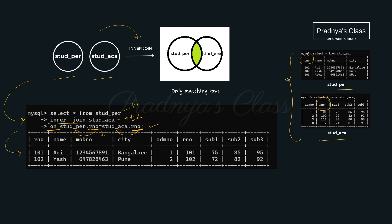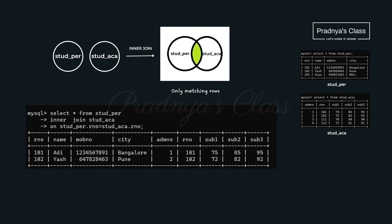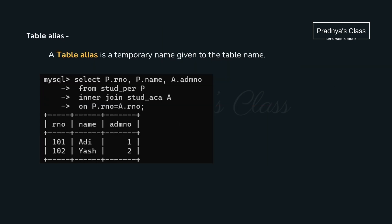From the query output we can see that only the common records are displayed. Here 101 is present in both tables, and 102 is also available in both, so we get those records. When working with joins involving two or more tables, we have to mention the table name each time. If the table name is complicated, the query looks complicated too. To solve this, we can use table alias — giving the table a temporary simplified name.